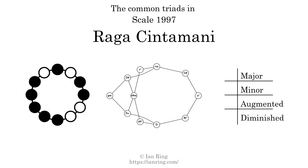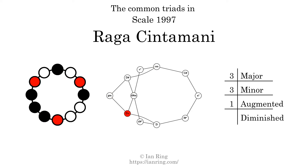Here are the common triads present in this scale. The diagram in the center is a graph of parsimonious voice leading between triads. There are 3 major triads, 3 minor triads, and 4 diminished triads. Here is a Hamiltonian path of parsimonious voice leading that uses all the triads.